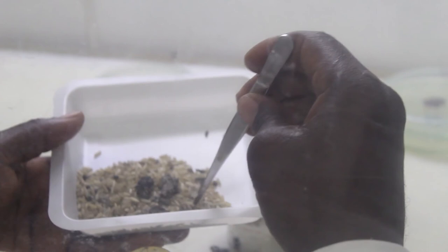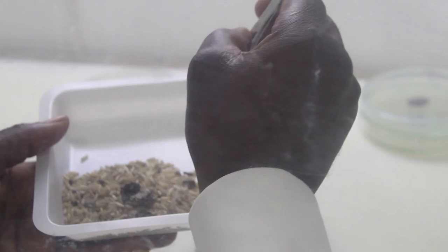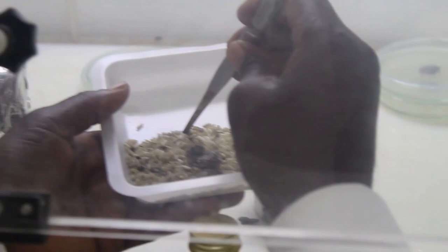Three grains of the colonized rice will then be used to inoculate each cowpea seed, and we will observe for disease formation.